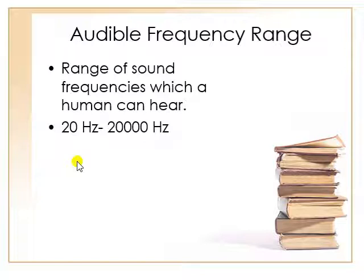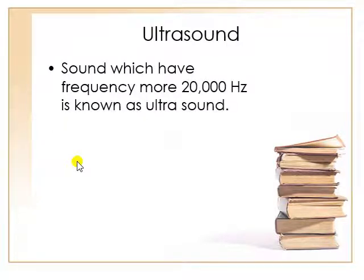A child can listen to sounds of more than 20,000 hertz, but older humans — those above 50 years of age — cannot hear even 15,000 hertz sounds. So age factor also affects audible frequency range. Our next topic is ultrasound. Ultrasound means a sound which has a frequency of more than 20,000 hertz. That is the simple definition of ultrasound.